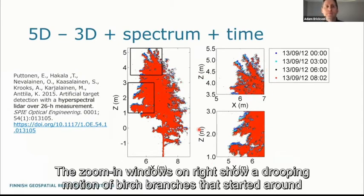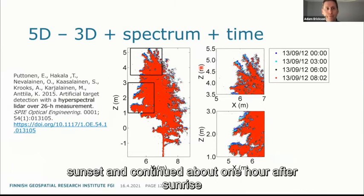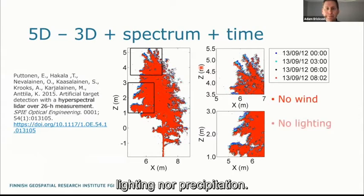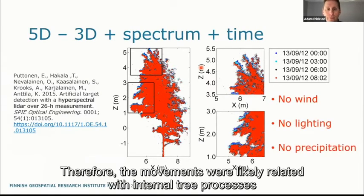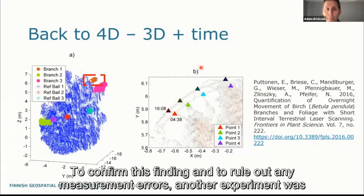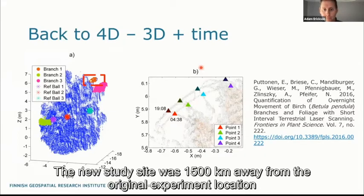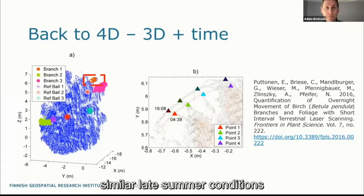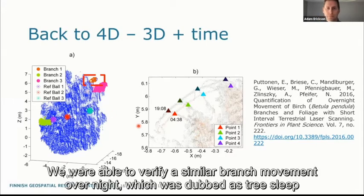In 2013, we took the hyperspectral LiDAR prototype to the field to conduct a new hyper-temporal change detection experiment. Our goal was to determine changes in object reflectivity over a relatively short one-day time interval. The scene was scanned once per hour. The experiment showed that the NDVI response of natural target point clouds presented clear changes just before sunrise. A closer look revealed clear systematic movements in the tree canopy — a clear grouping motion of birch branches that started around sunset and continued about one hour after sunrise. Measurement conditions were stable with no air flows, no lightning, and no precipitation, so the movements were likely related to internal tree processes.